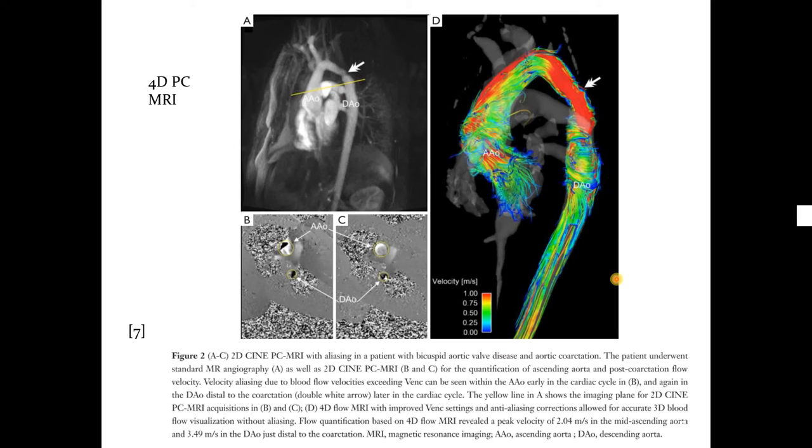Before I conclude, I want to share this 4D PC MRI with you. These two images are 2D PC images. In this figure, you can see 4D PC MRI image. In this case here, high velocities are mapped to red and low velocities are mapped to blue.